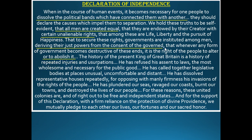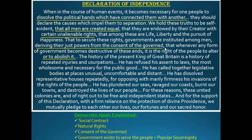And if the government becomes destructive of these ends, it is the right of the people to alter or to abolish it — that also comes from Rousseau. The people can overthrow the government if it becomes tyrannical. According to the College Board, this is what you need to know about Enlightenment ideals in the Declaration: social contract (Rousseau), natural rights (John Locke), consent of the governed, and government exists to serve the people — popular sovereignty.